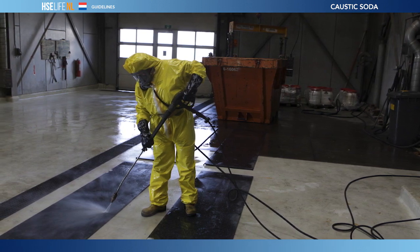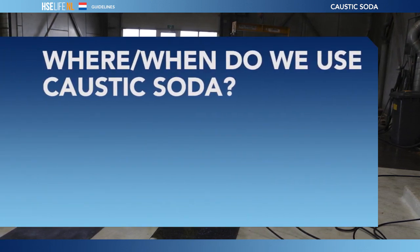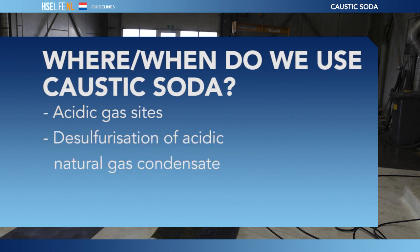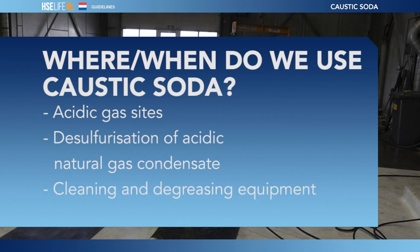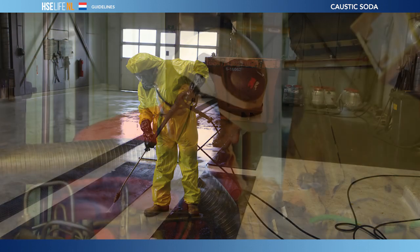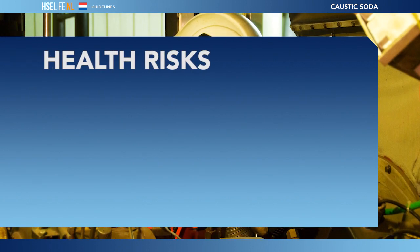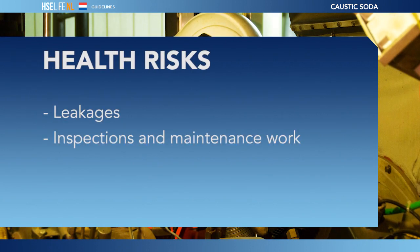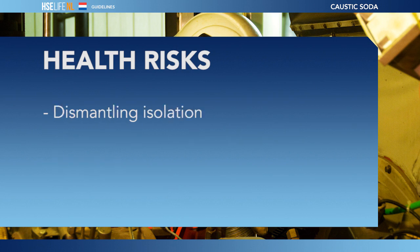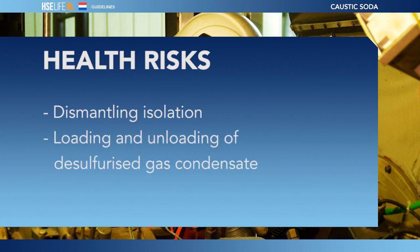Where and when do we use caustic soda? We use this substance at sites where acidic gas is extracted — for the desulphurization of acidic natural gas condensate, and also for cleaning and degreasing equipment. The main situations in which you may be exposed to caustic soda are: in case of leakages, during inspections and maintenance work, when taking samples, when dismantling isolation, and during loading and unloading of desulphurized gas condensate.